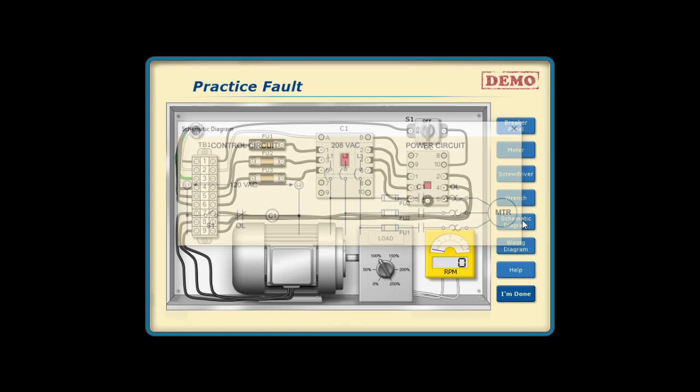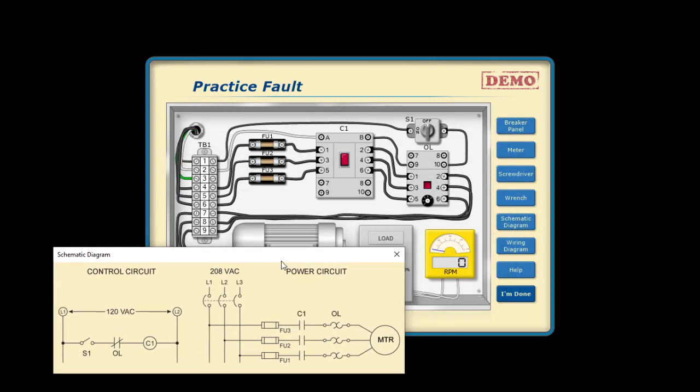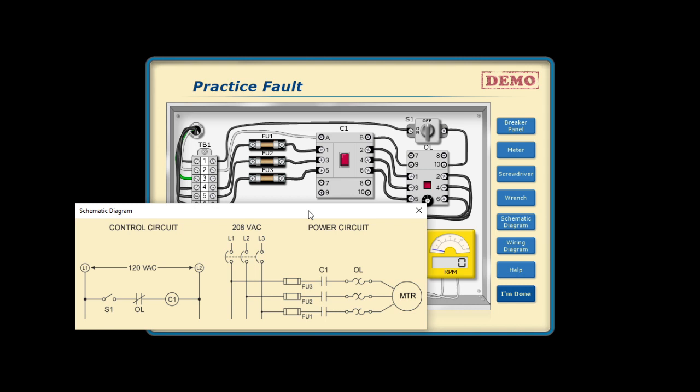Now let's review the schematic diagram. As we can see here, we have the control circuit and we have the power circuit. Most of this discussion, we will have a thorough discussion on the motor control circuit when we get to electrotechnology number 3. So for now, this is what we'll discuss.